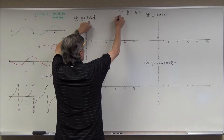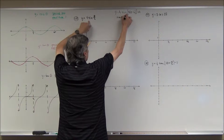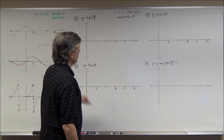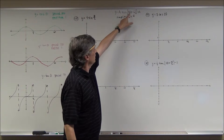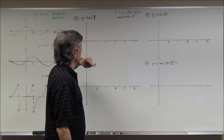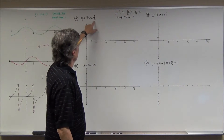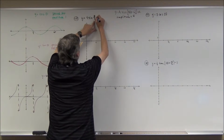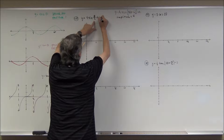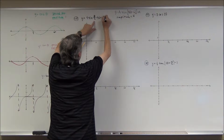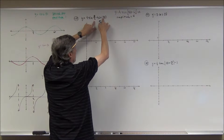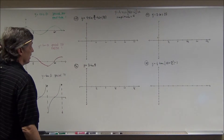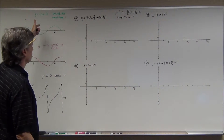In this case, the absolute value of 'a' is the amplitude, so the amplitude is going to be equal to 4. The period is also affected because this value B affects the period of the graph. Even though it doesn't look like a nice constant, this is the same as 4 times the sine of one-half theta, so B is one-half.